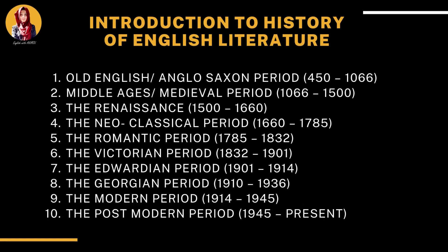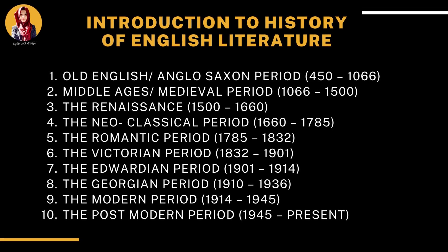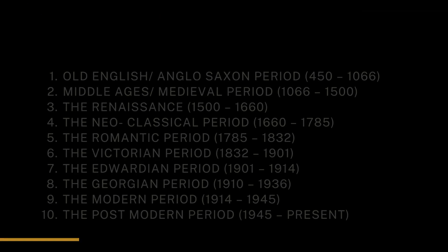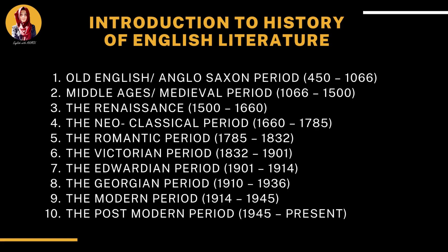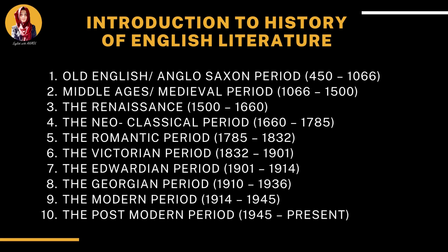The history of English literature can be divided into 10 different periods: 1. Old English or Anglo-Saxon period, 2. Middle Ages or Medieval period, 3. Renaissance period, 4. Neoclassical period, 5. Romantic period, 6. Victorian period, 7. Edwardian period, 8. Georgian period, 9. Modern period, 10. Postmodern period. Now let's discuss the time period one by one.